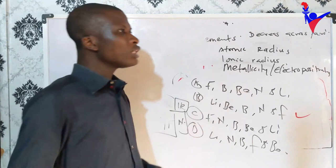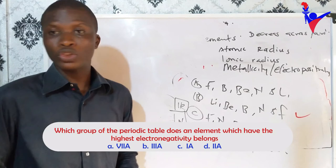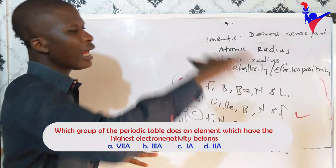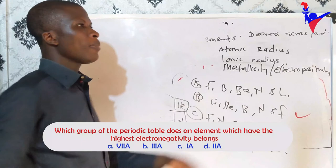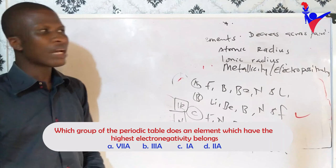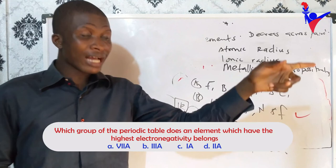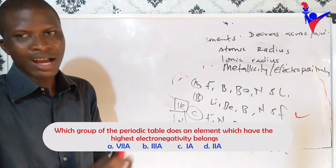Which group has the element with the highest electronegativity? Electronegativity increases across the period and decreases down the group, so group 1 has the least electronegativity and group 7A has the highest. Noble gases are not included because they are inert and unreactive, having 8 electrons in their outermost shell. Therefore, group 7A has the highest electronegativity.